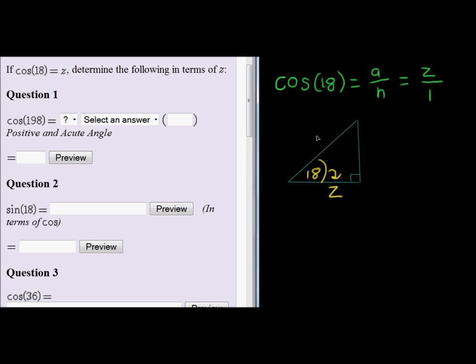Our hypotenuse is equal to 1. What will the opposite side's length be? We know that hypotenuse squared (this is Pythagoras) equals adjacent squared plus opposite squared. So opposite squared equals hypotenuse squared minus adjacent squared, which is 1² minus z², or 1 - z².